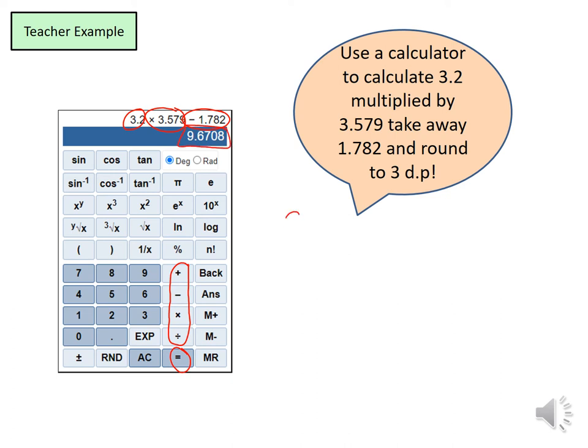I must round that to 3 decimal places. So 9.6708. I have the third decimal place here and I've got a line after this one. And if that is a 5 and above, that 0 will round up to a 1. And because it is 8, the 0 will round up to 1. And that becomes 9.671.